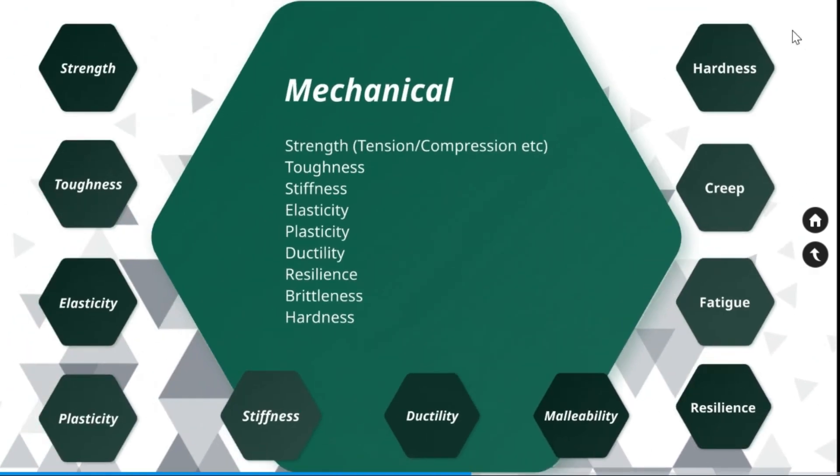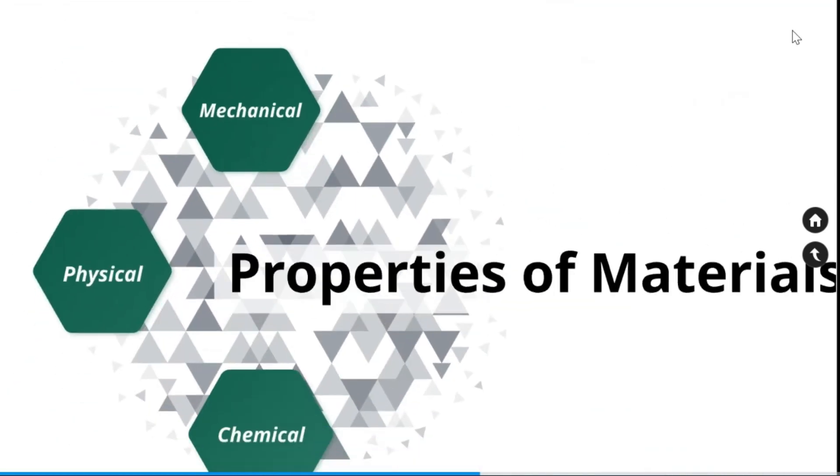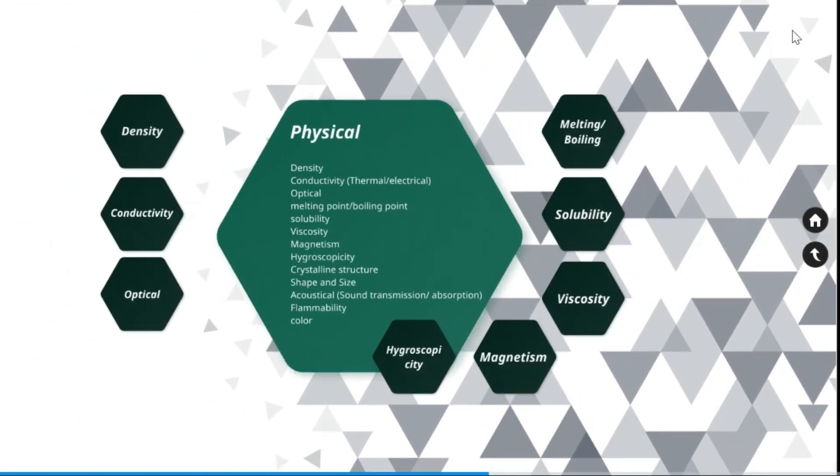Now we will see what are the physical properties of materials. Physical properties of materials are density, thermal conductivity, electrical conductivity, optical properties, melting point, boiling point, solubility, viscosity, magnetism, hydroscopicity, crystalline structure, shape and size, acoustical characteristics, flammability and color.